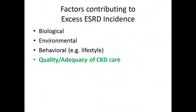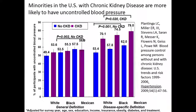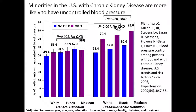What about the quality and adequacy of CKD care? We know that blood pressure control helps prevent progression. A study looking at minorities in the U.S. with chronic kidney disease showed that compared to whites, African Americans — with or without CKD — have higher levels of uncontrolled blood pressure, which becomes even more dramatic using a stricter definition of blood pressure control. So how we treat individuals may also contribute to progression.